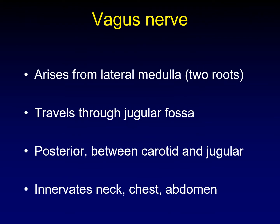Number 10, the vagus nerve. The vagus nerve arises from the lateral medulla and has two distinct roots. Those two roots together cross the lateral medullary cistern and then enter the jugular fossa. As the vagus nerve continues down in the neck, it runs posteriorly in the carotid sheath between the carotid artery and the jugular vein, eventually innervating a variety of organs in the neck, chest, and abdomen.